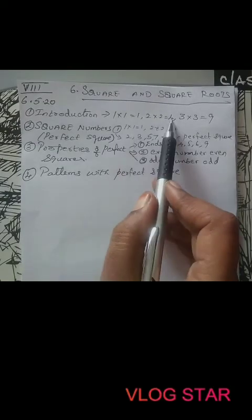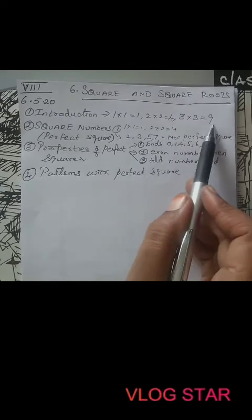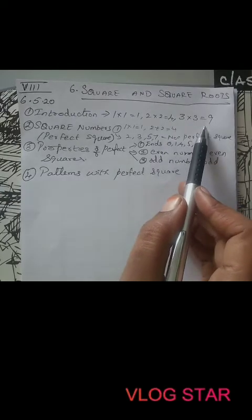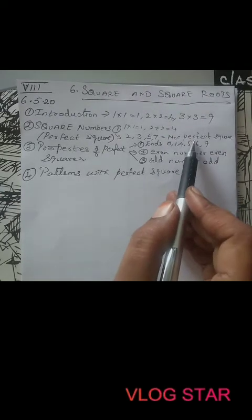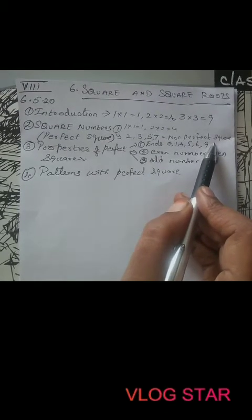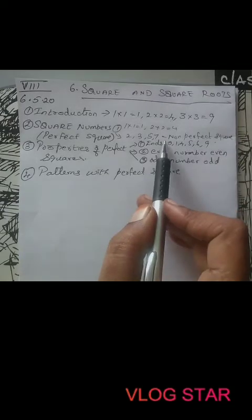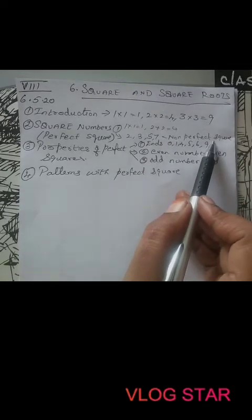In between perfect squares, for example between 1 and 4, you have numbers 2 and 3. Between 4 and 9 you have 5, 6, 7, 8. Those numbers are non-perfect squares. A perfect square is when a natural number is multiplied by itself. The number which has factors other than itself we call it a non-perfect square.